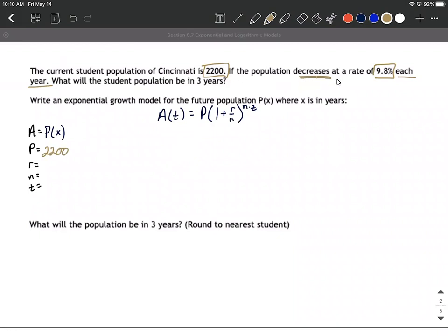And it decreases at a rate of 9.8 percent each year. So 9.8 percent is 0.098. That's the typical, we'll go two decimal places to the left. However, this is decreasing.